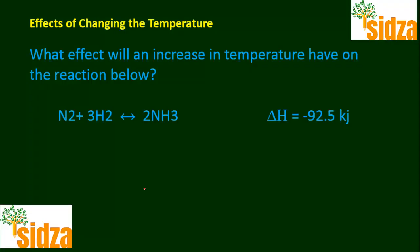Let's take an example. In this reversible system, nitrogen gas reacts with hydrogen to form ammonia. The delta H for the reaction is negative, which means this is an exothermic reaction. When nitrogen and hydrogen combine, ammonia is formed and some heat is also given out.